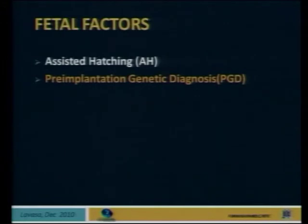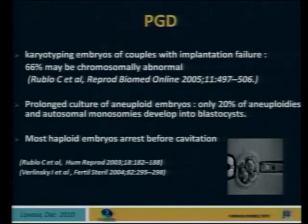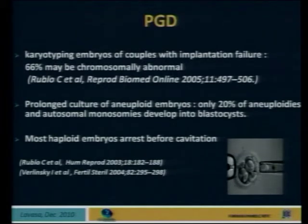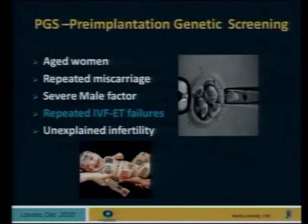What about PGS or PGD? As you know, when we karyotype embryos in couples with implantation failure, 66% may be chromosomally abnormal. Why? Because prolonged culture may cause it. And when we take aneuploid embryos, only 20% will go to blastocysts, and they arrest before cavitation. So maybe we should diagnose them before we transplant them. PGS screening was advocated in older women, in repeated miscarriage, in severe male factor, and in repeated IVF failures.